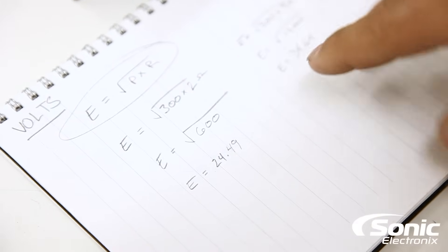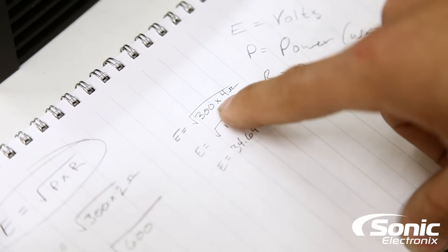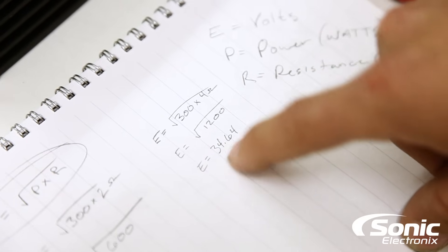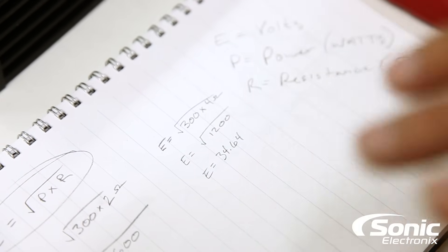Now we'll show you what that means in a minute. Now if you have a 4 ohm woofer, we're gonna do the same exact thing: 300 watts times 4 ohms gives us 1200, and the square root of 1200 gives us a target voltage of 34.64.